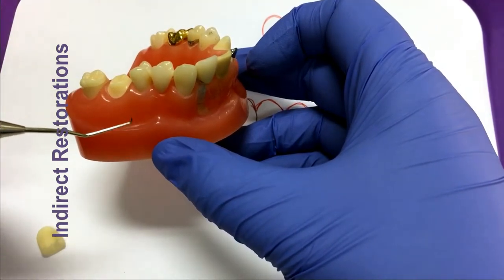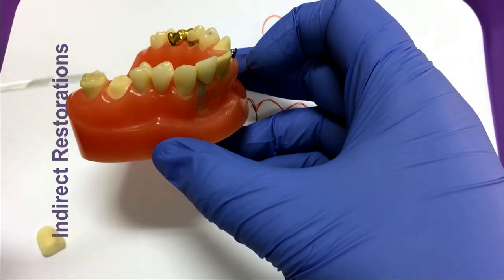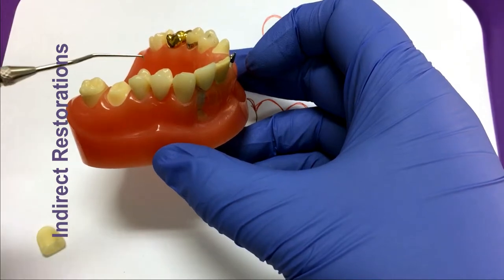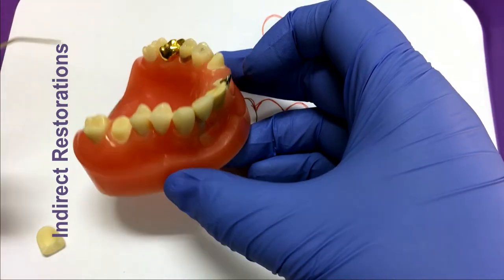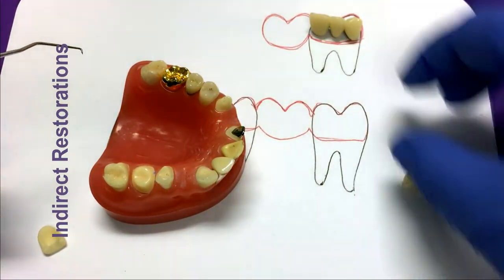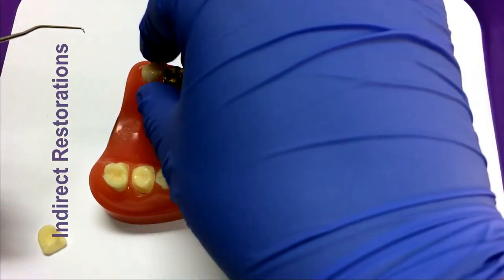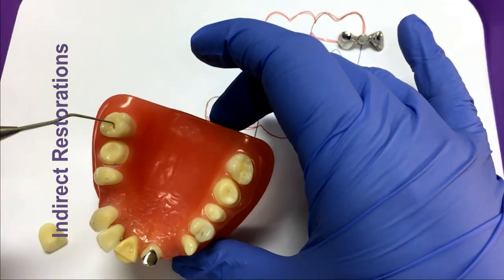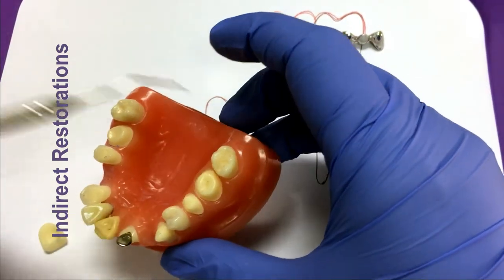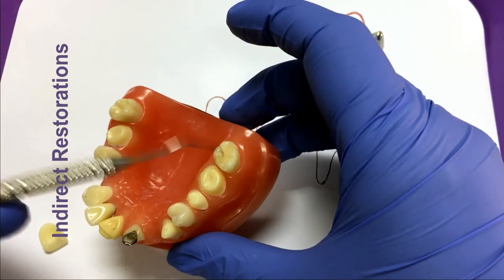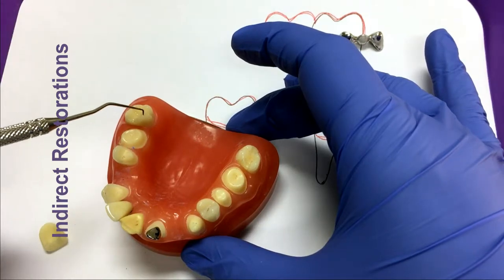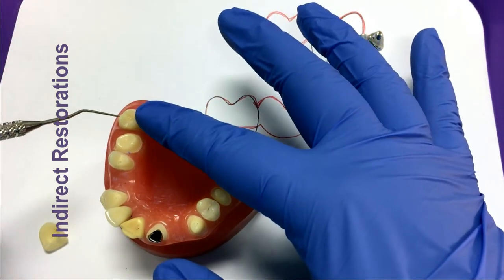The last restoration we have here is an onlay. Remember we had an inlay that fit into the grooves of the teeth. Onlays cover at least one cusp. This one on this model happens to cover all four cusps. But if you notice, the tooth itself is not as reduced as a tooth that receives a full crown. So the patient still has natural tooth structure, some natural tooth structure on the buccal and some natural tooth structure on the lingual.